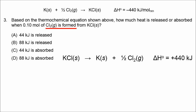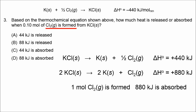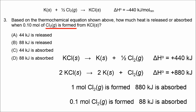If we doubled the equation coefficients, that would give us 1 mol of chlorine instead of a half mol. Doubling the coefficients also doubles the value of delta H. So if 1 mol of chlorine is associated with 880 kilojoules of heat being absorbed (delta H is now positive), then 0.1 mol of chlorine being formed would involve 88 kilojoules of heat being absorbed. The correct answer is D.